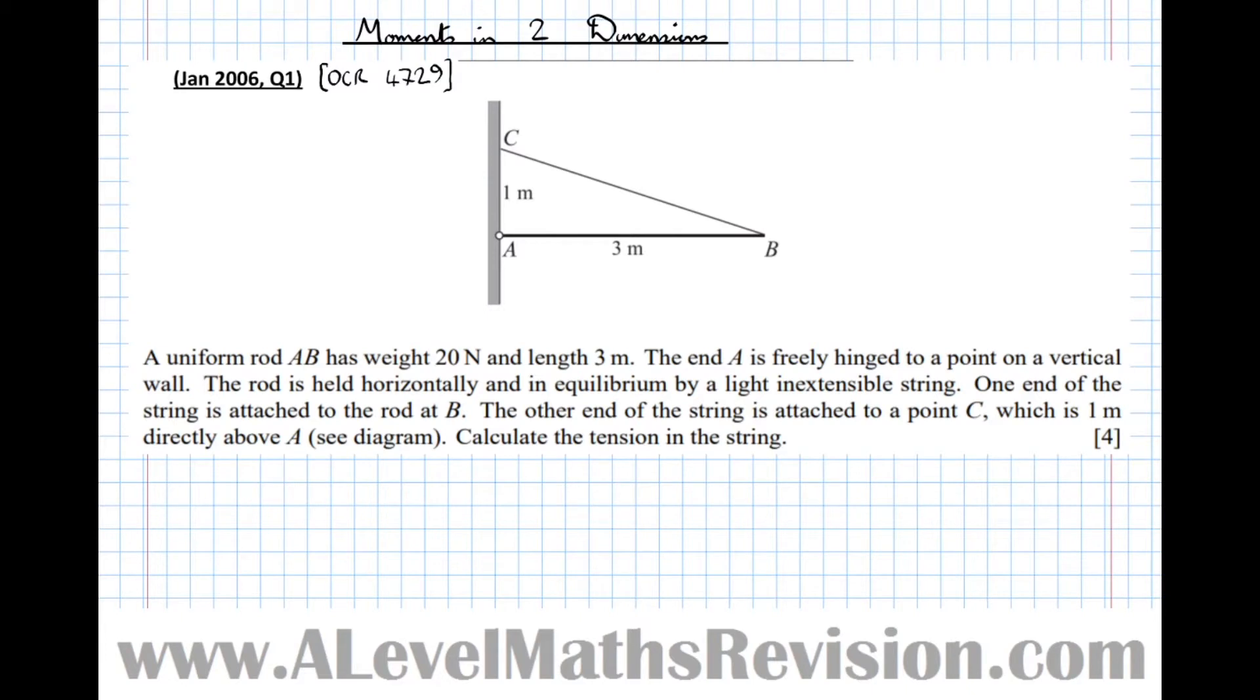Now the first thing I notice about a problem like this is that I don't know this angle here. But actually this angle is pretty straightforward to work out, because we've got an opposite and an adjacent side. So here we know that tan theta equals opposite over adjacent. So if we now work out the hypotenuse, so the hypotenuse is root of 3 squared plus 1 squared equals root 10.